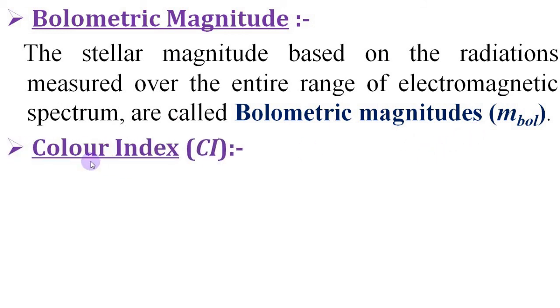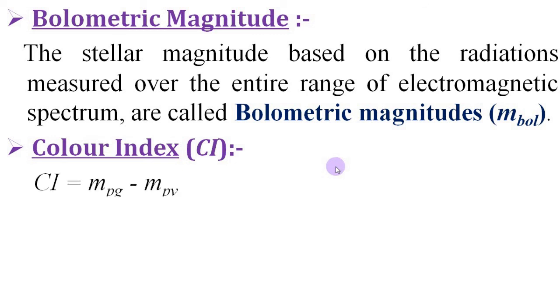Again, what is the color index of the star? We have to know this also. Since the color of light depends on wavelength, stars of different temperature will appear to be of different colors. It is an observed fact that our eye is more sensitive to yellow and green lights, whereas photographic plates are more sensitive to blue light. Thus, the photographic and photovisual magnitudes of the same star at the same temperature are not the same. The difference between the photographic and photovisual magnitudes of a star is known as color index.